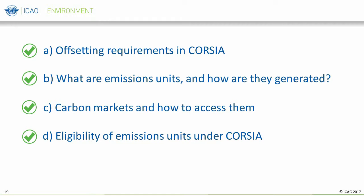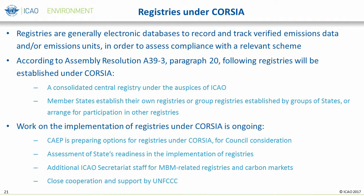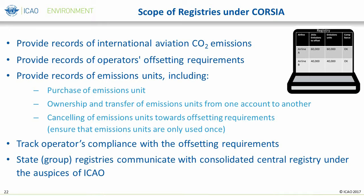We have now completed the tutorial on emission units and their eligibility and use under CORSIA. We will now go into a discussion around registries, which are addressed in Paragraphs 20F, G, and H, and Paragraphs 22C and D of Assembly Resolution A-39-3. Registries are generally electronic databases used to record and track verified emissions data and/or emissions units in order to assess compliance with a relevant scheme. Work on the implementation of registries under CORSIA is ongoing, and CAEP is preparing options for registries for Council consideration, including an assessment of states' readiness. Although the scope of the registry is still being evaluated, this slide provides a sample of some of the functions being considered.